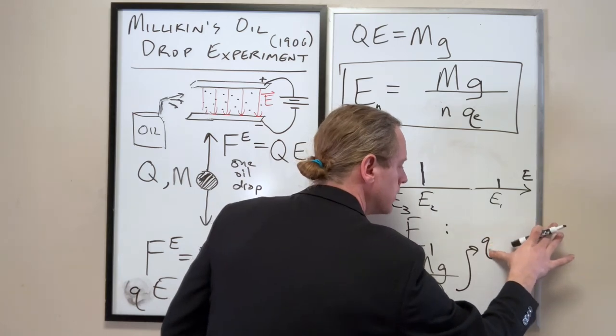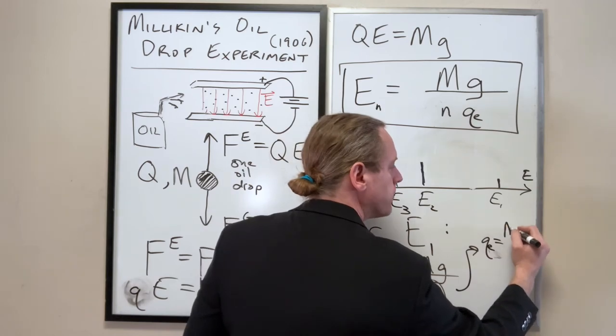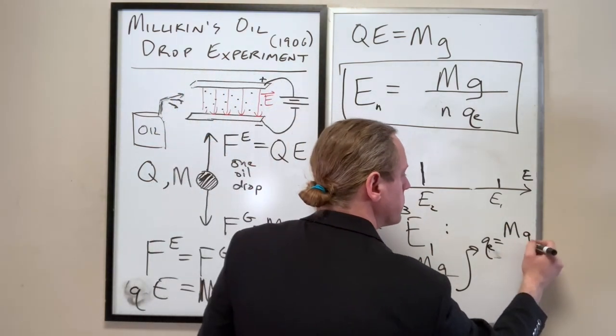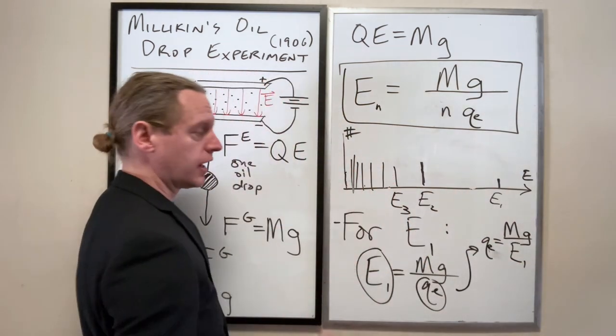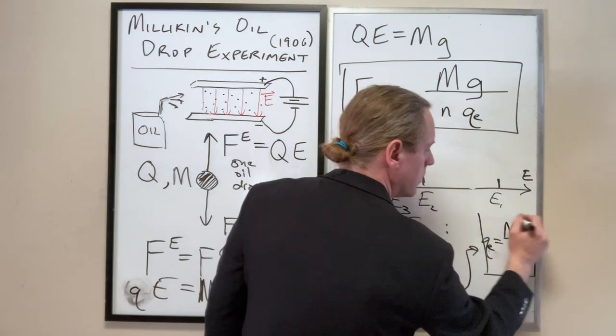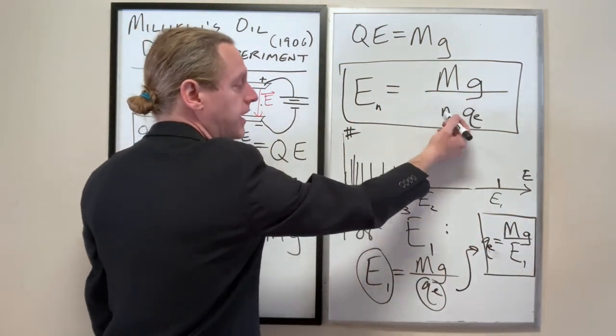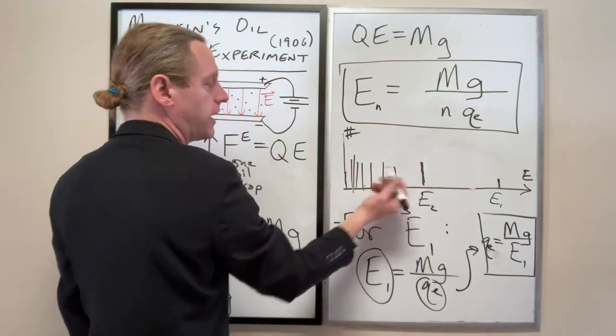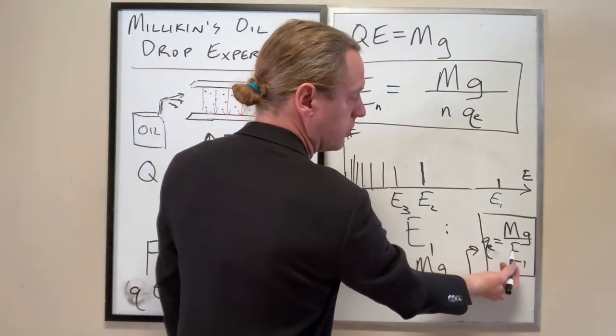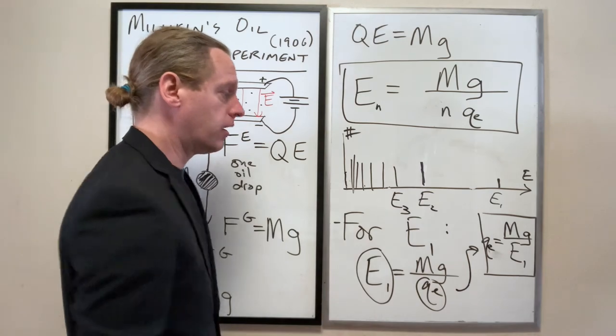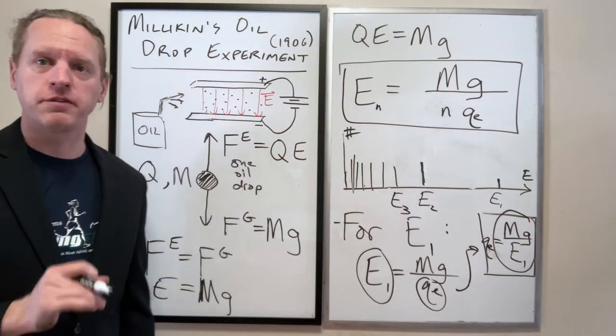So E1 should equal mg over QE times 1, or literally by measuring this, you've just measured that. So we can set the charge of the electron, QE, simply just equal to whatever we measured there, the mass of those droplets, which is a measurable quantity, times g over whatever that first observed electric field peak was. And then you can confirm that based on the one half of that is E2, one third of that is E3, one fourth of that is E4, and so on. And once you actually confirm your measured values with the theoretical result there, you have literally measured the charge of the electron.